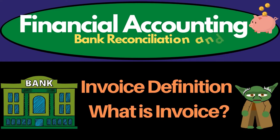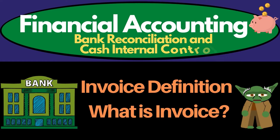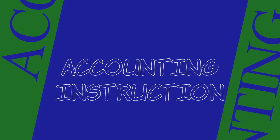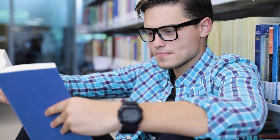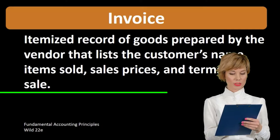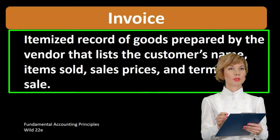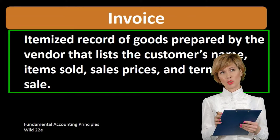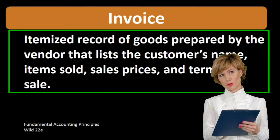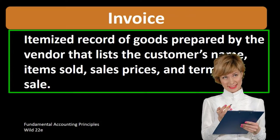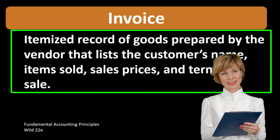Hello. In this lecture we're going to define invoice. According to Fundamental Accounting Principles, 22nd Edition, the definition of invoice is an itemized record of goods prepared by the vendor that lists the customer's name, items sold, sales price, and terms of sale.